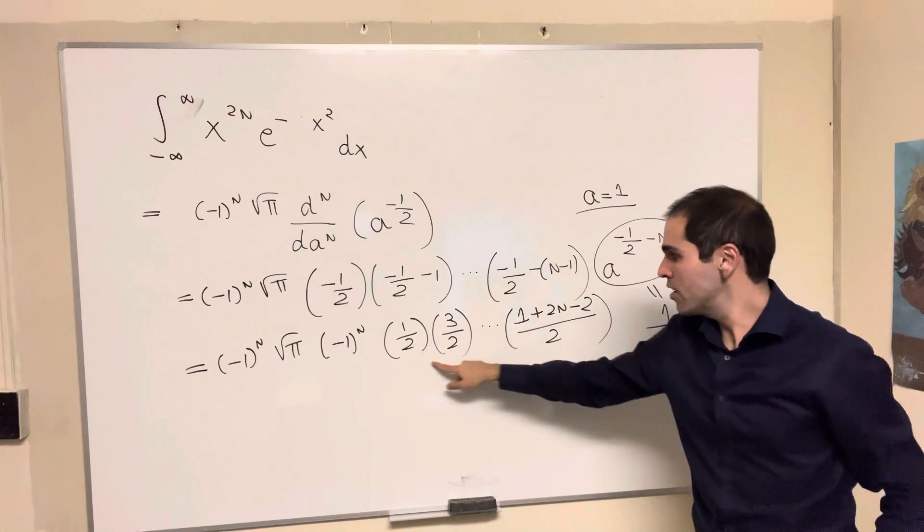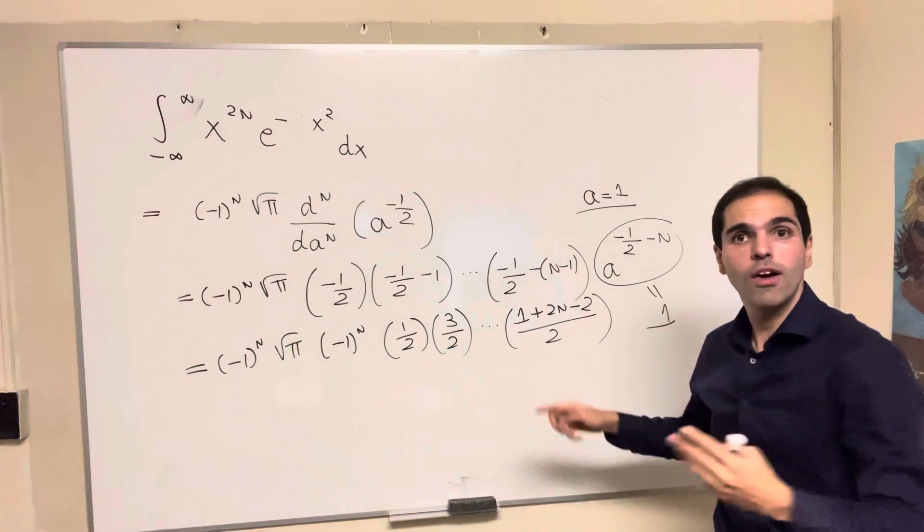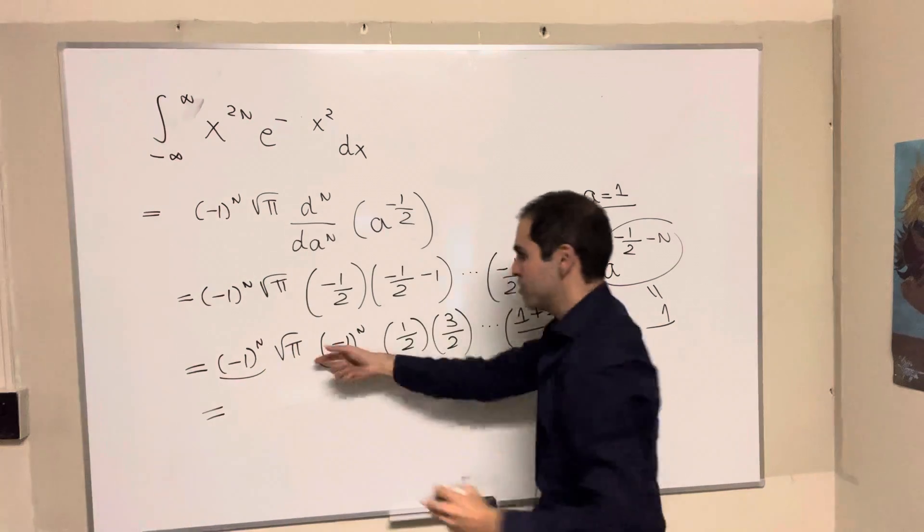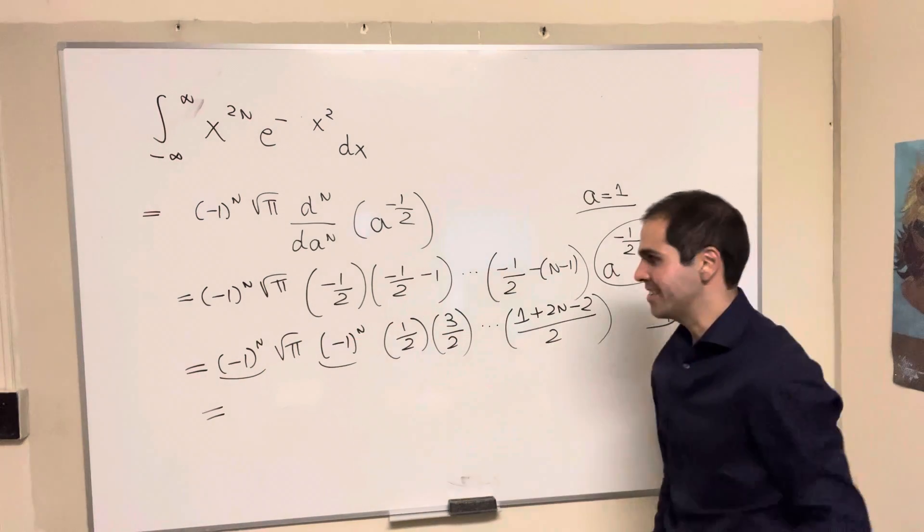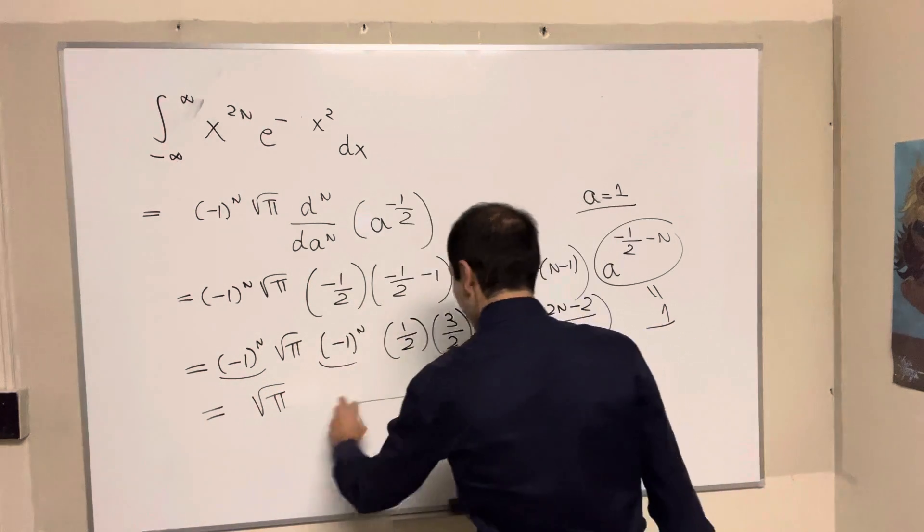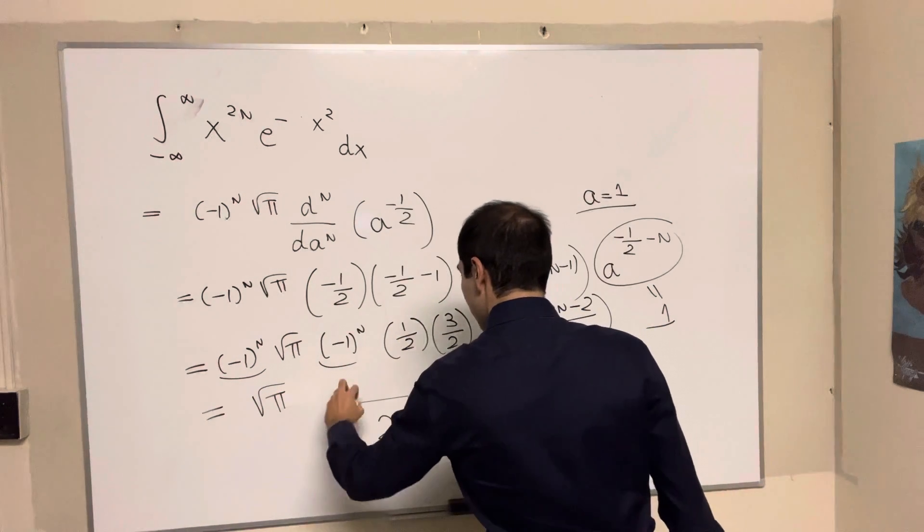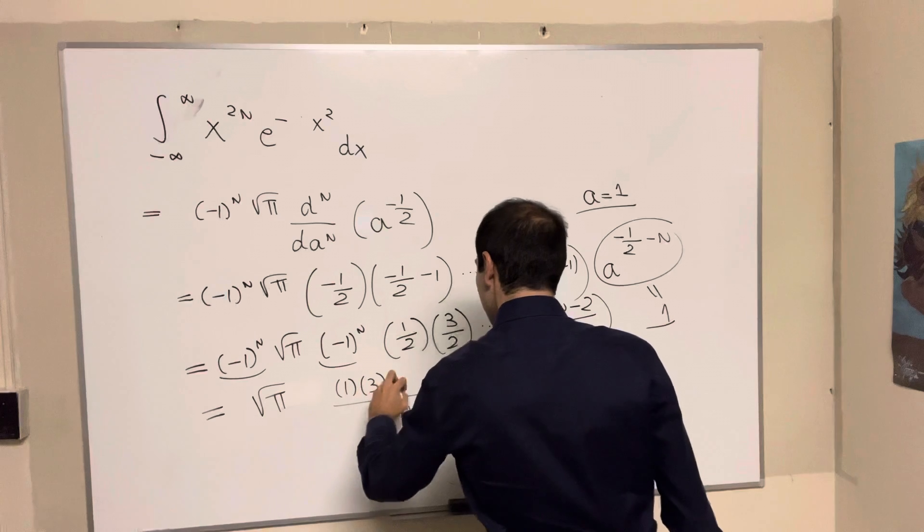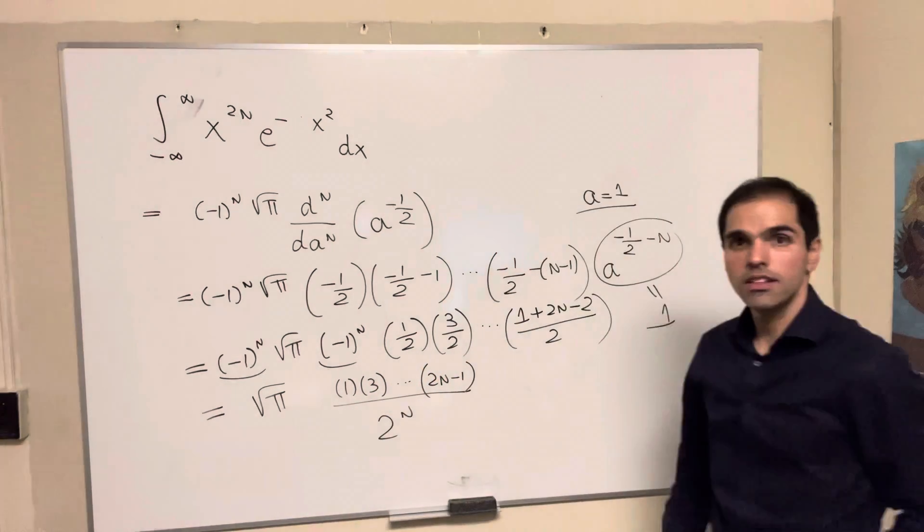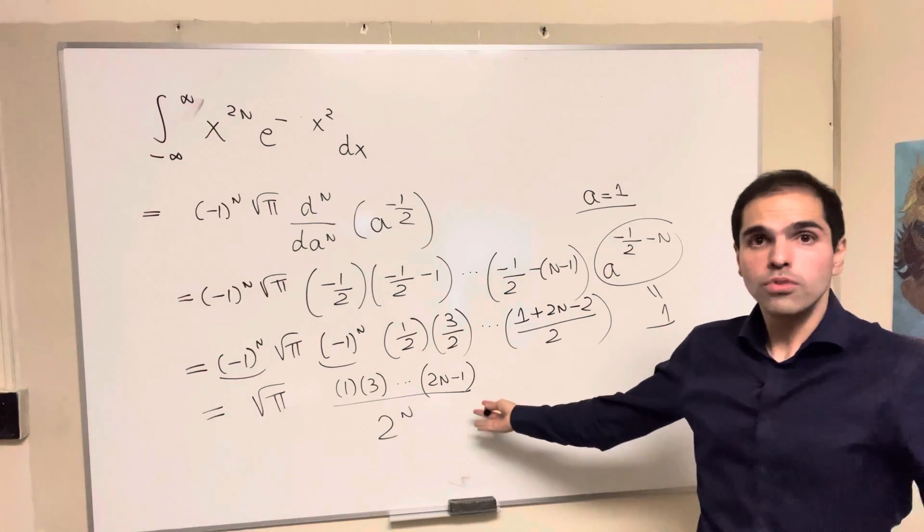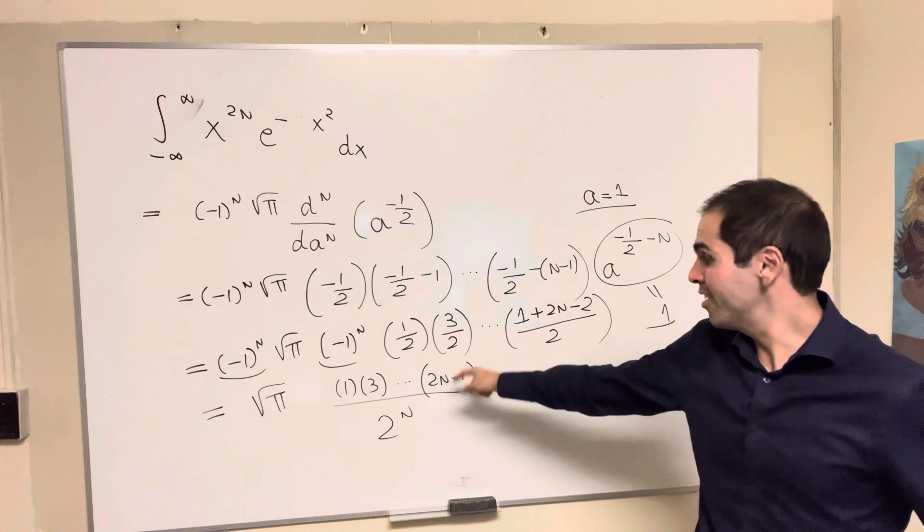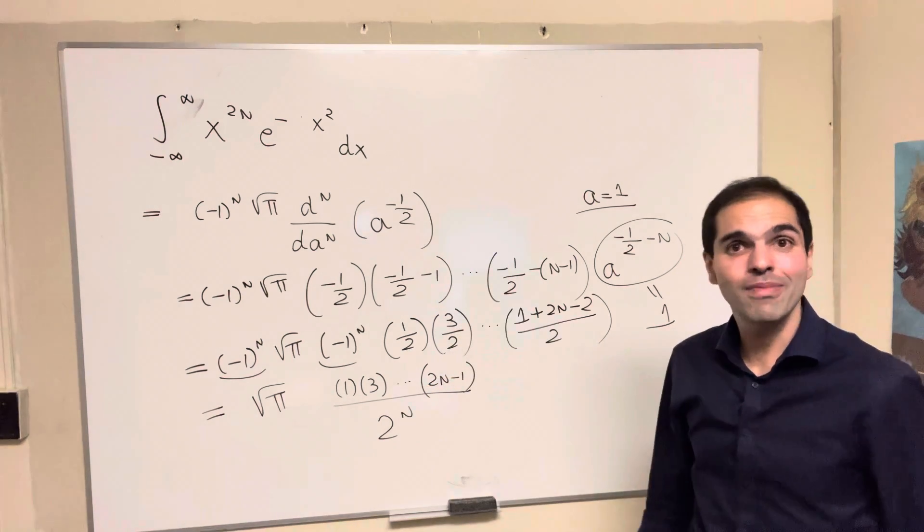And then the cool thing is, on the bottom, we have all those powers of 2. And by the way, so those minus signs kind of cancel out. We have an even number of minus signs. So you get square root of pi, 2 to the n, 1, and then 1 times 3, up to 2n minus 1. Now, you can leave it as that. It's completely fine, the product of all the odd numbers between 1 and 2n minus 1.